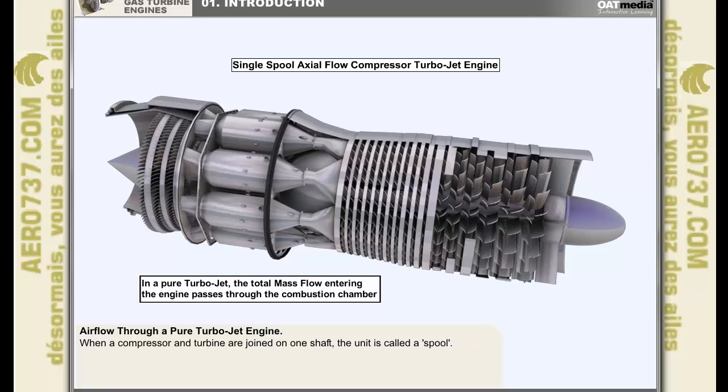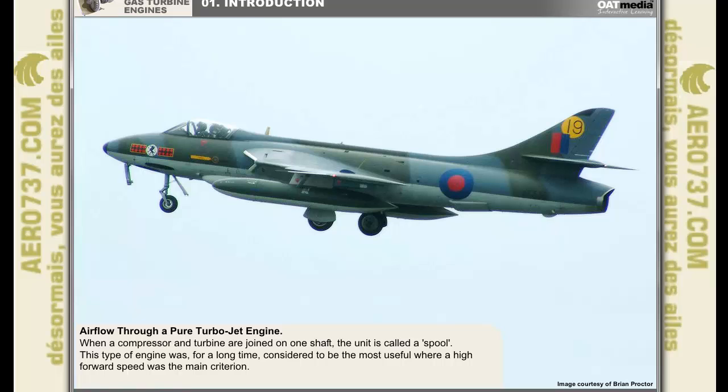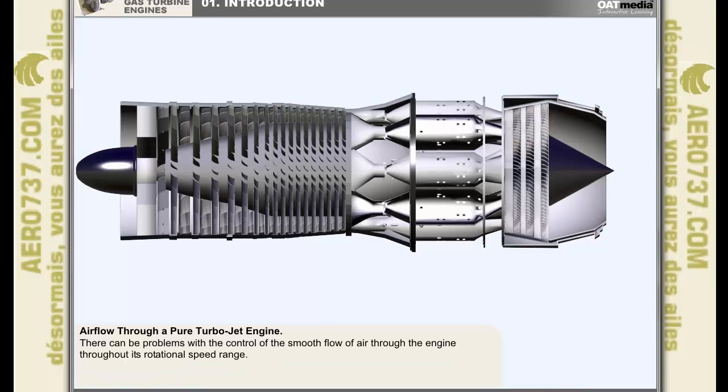When a compressor and turbine are joined on one shaft, the unit is called a spool. This diagram shows a single spool axial flow compressor turbojet engine. This type of engine was, for a long time, considered to be the most useful where an engine with a small frontal area was required, such as in fighter aircraft, where a high forward speed was the main criterion. There are, however, problems with the control of the smooth flow of air through the engine throughout its rotational speed range.